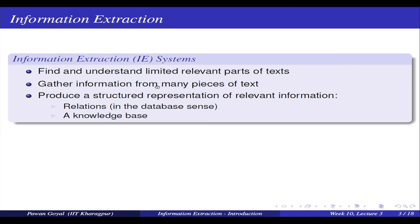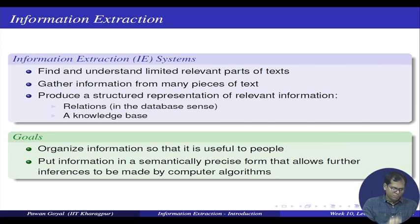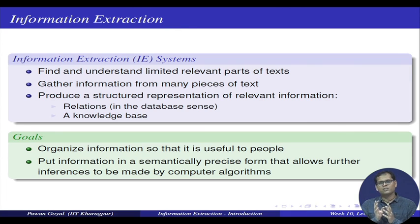From all this data that is available, you want to get a structured representation of some sort of relevant information. It can be like various relations in the sense of a database - you can find out what are the various entities involved in this text and what are the relations between those entities. It can also be some sort of knowledge base that you are constructing from the data. The goal of information extraction is that we organize information so that it can be useful for people doing various tasks, and we want to put information in a very precise form that will allow us to make further inferences.